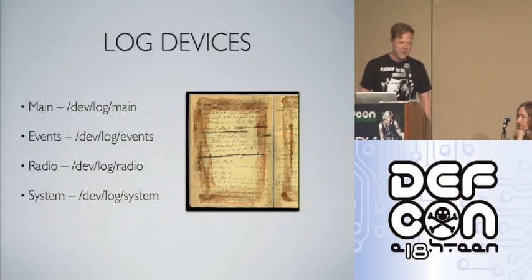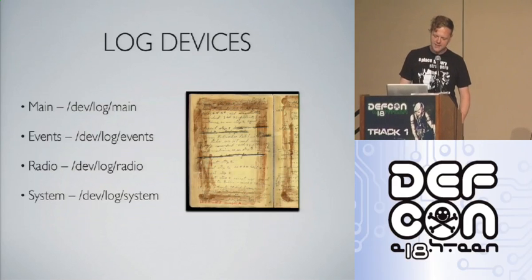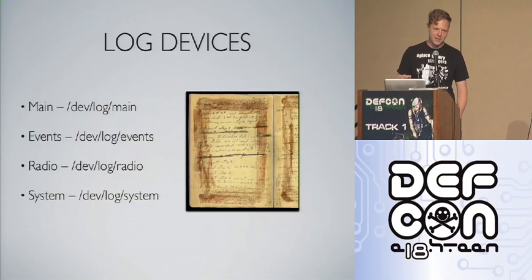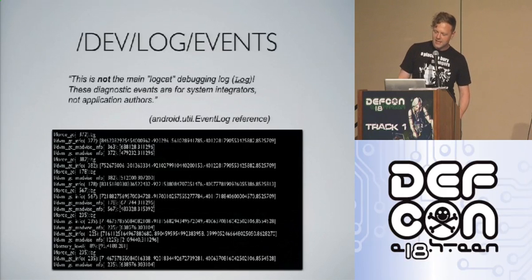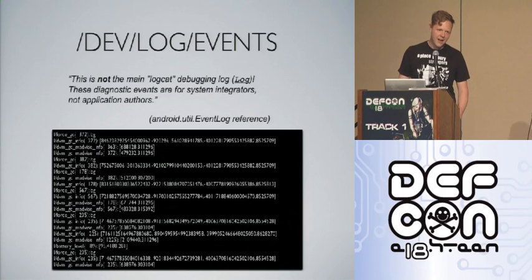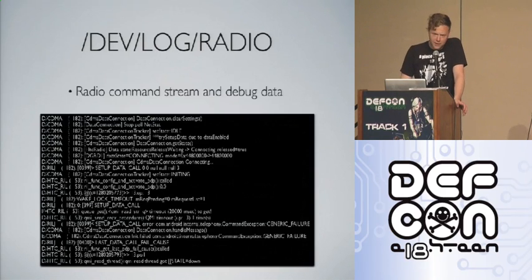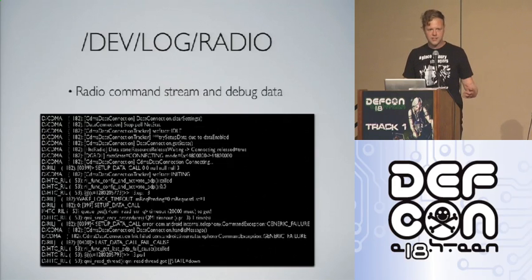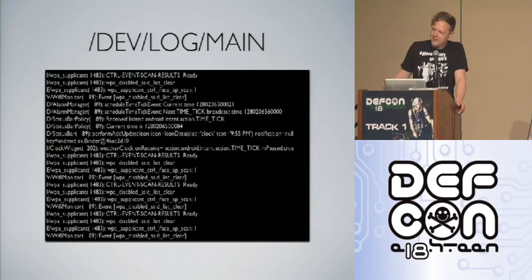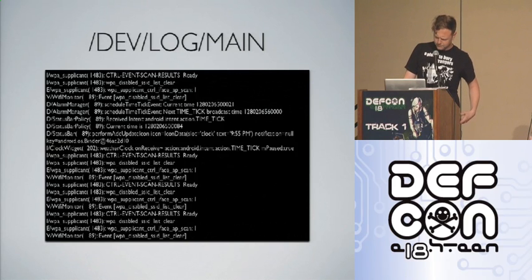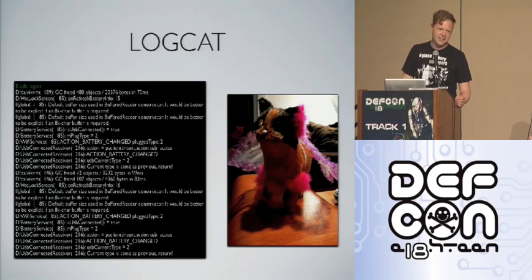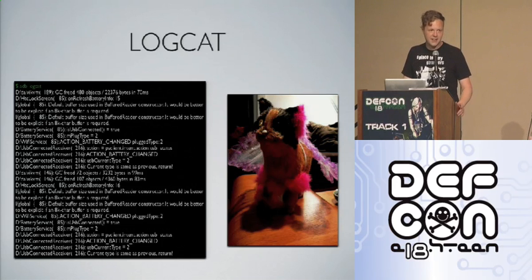There are actually four different log devices available on a typical handset — up until 2.2 there were three, with a fourth appearing in 2.2. /dev/log/events is for diagnostic events typically used by integrators or people working on the core system. /dev/log/radio contains radio command stream data and events about registering/unregistering from networks. /dev/log/main is where your typical log.D and log.E output from an application goes. You access these logs using the logcat utility, which produces a big stream of data because there's a lot of chatty activity on the device.